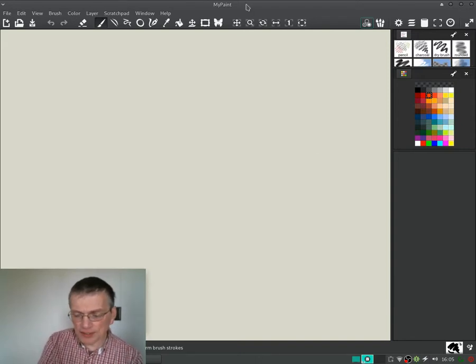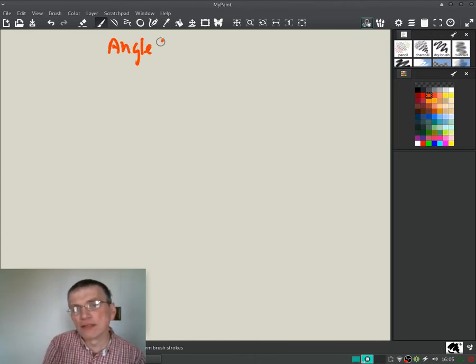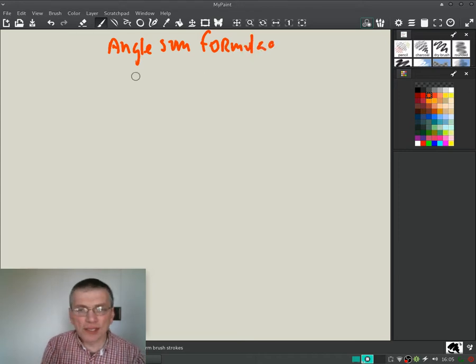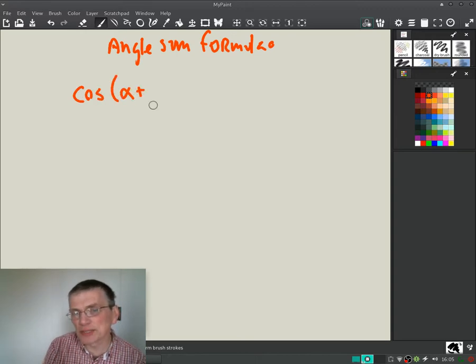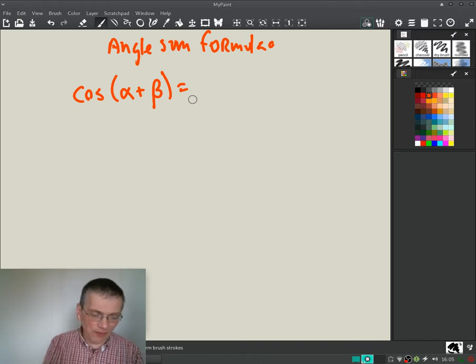Okay, today we're going to take a look at the angle sum formula and we're going to look particularly where it comes from. It's pretty handy. So you have cosine of two angles, alpha plus beta, equals... and I can never remember this, so I don't expect you to remember it.